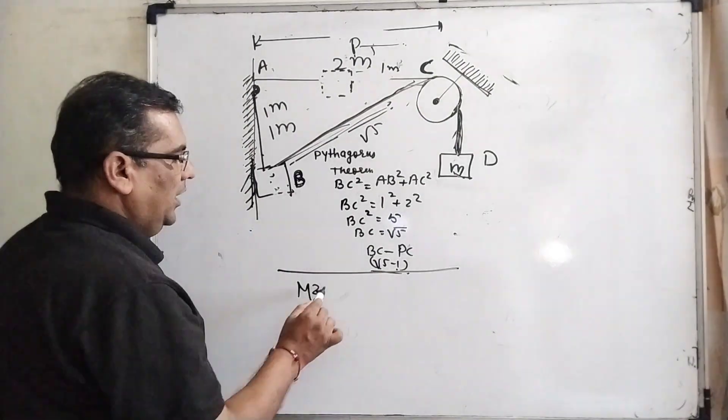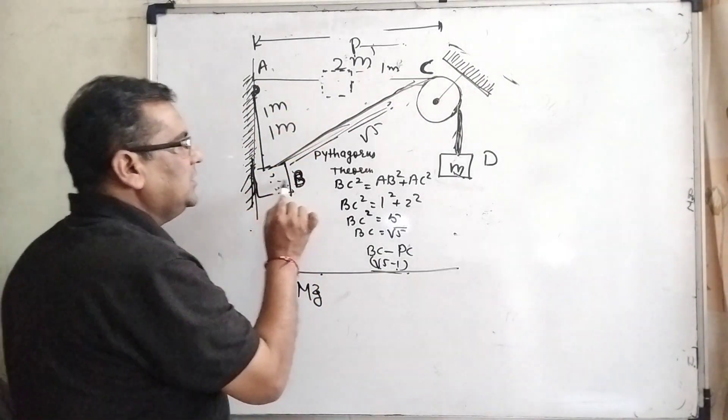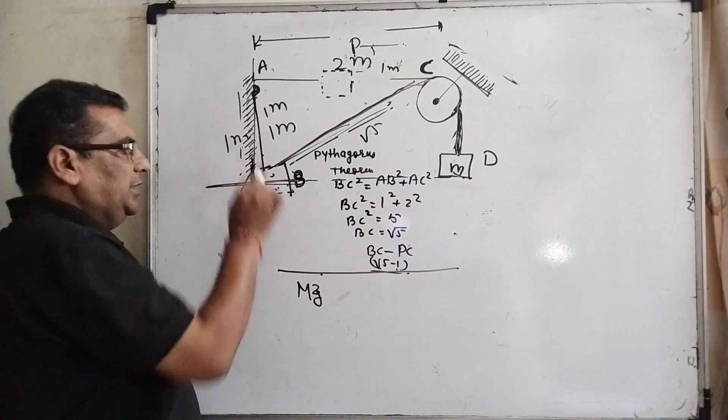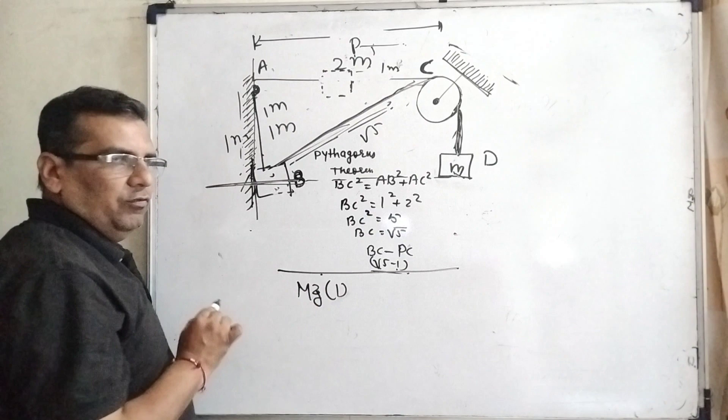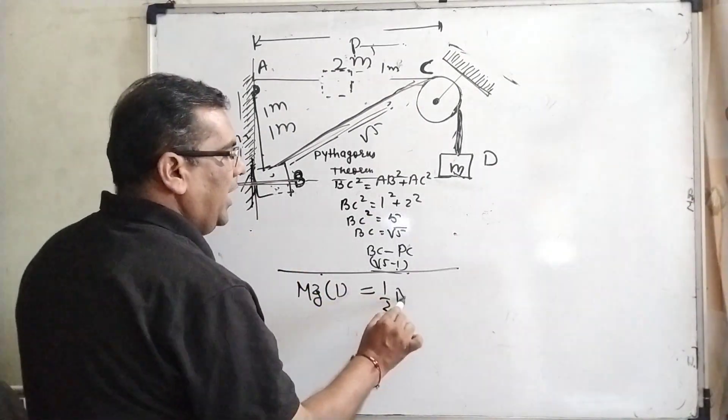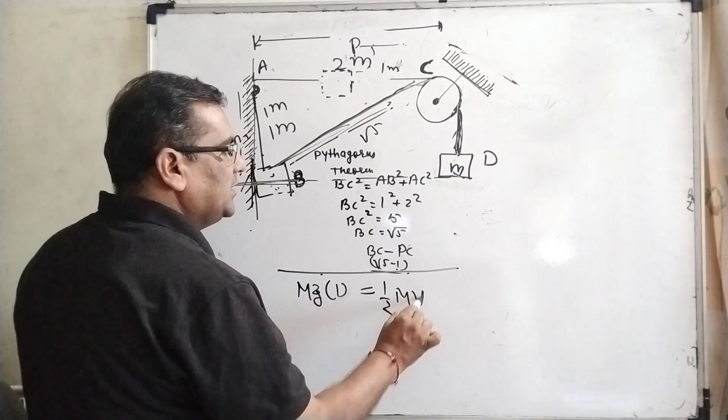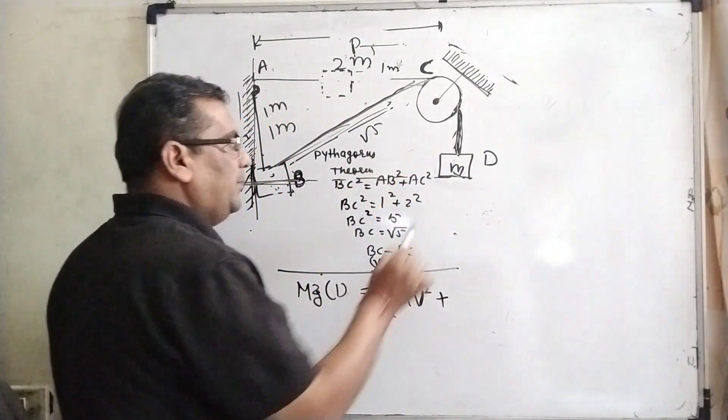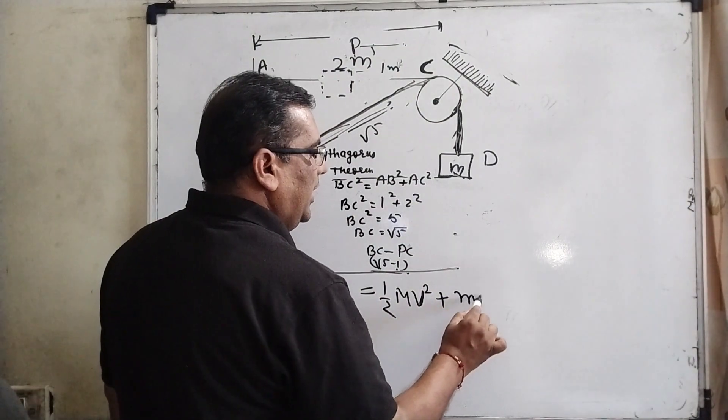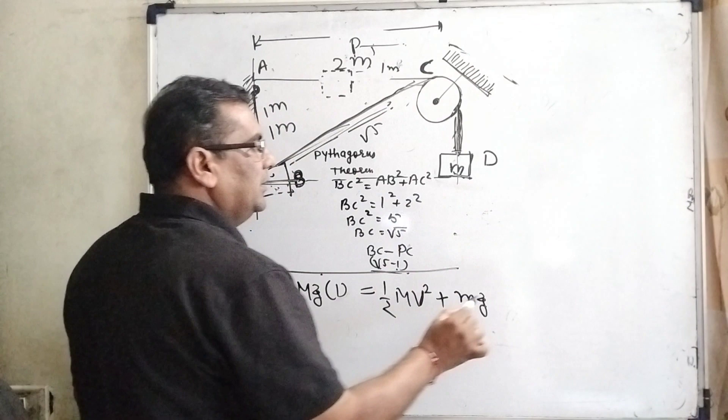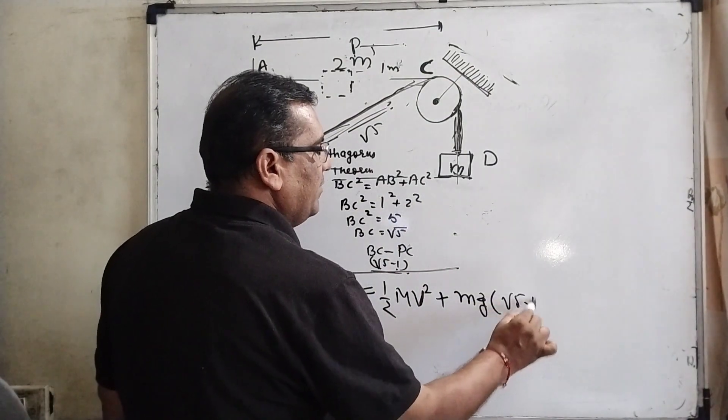It means Mg, and what is the height? Initially, let us consider this is the ground level, so here the distance is 1 meter, so here we can take 1. And kinetic energy of this block m—let us consider its speed is v squared.